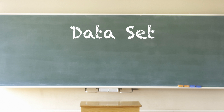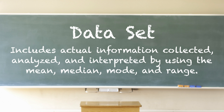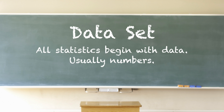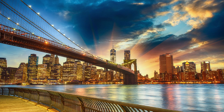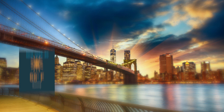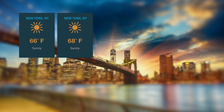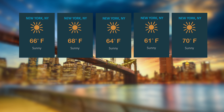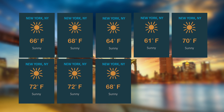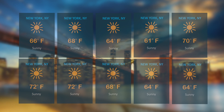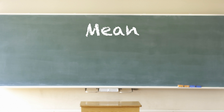The term data set includes the actual information collected, analyzed, and interpreted. All statistics begin with a set of data — usually numbers. Here's an example: 10 straight days of temperatures in New York City during October were 66, 68, 64, 61, 70, 72, 72, 72, 68, 68, 64, 64, 64.